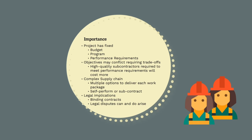On top of this, construction projects have complex supply chains. There are always multiple different options to deliver each package of works — we can do everything from self-performing the works using our own labour, plant and materials to using full turnkey subcontractors. There are multiple risks and scope allocation decisions that need to be made for each package of works. Something as simple as deciding to free-issue concrete to our formwork contractor could have significant or unforeseen logistical consequences.